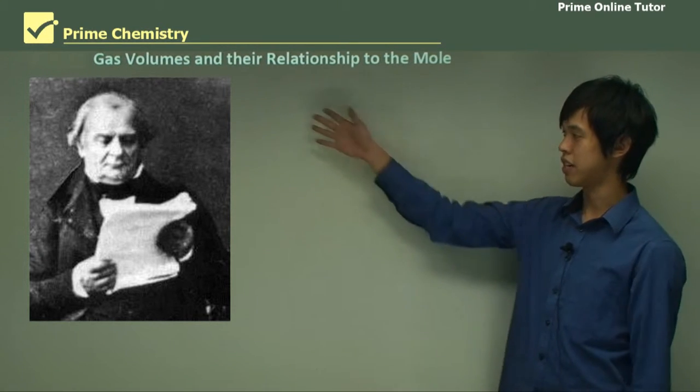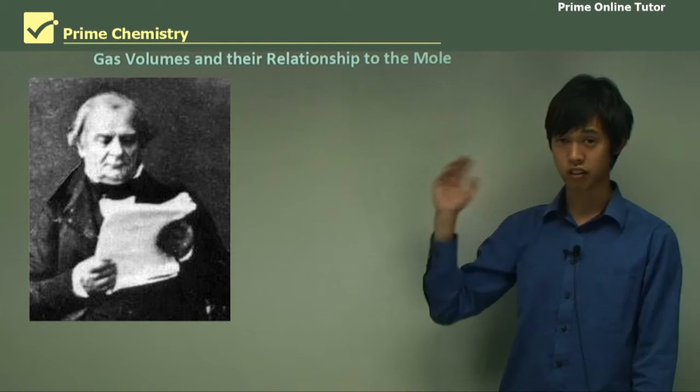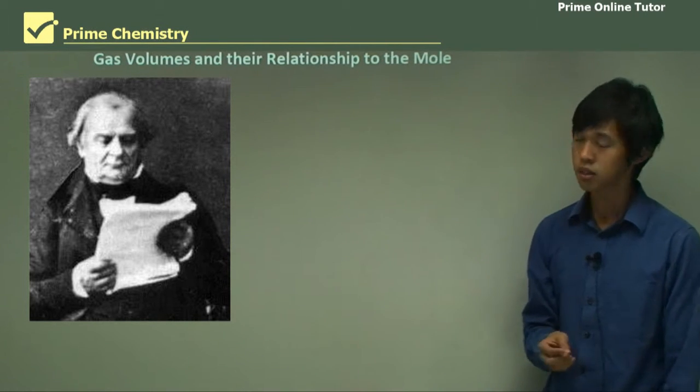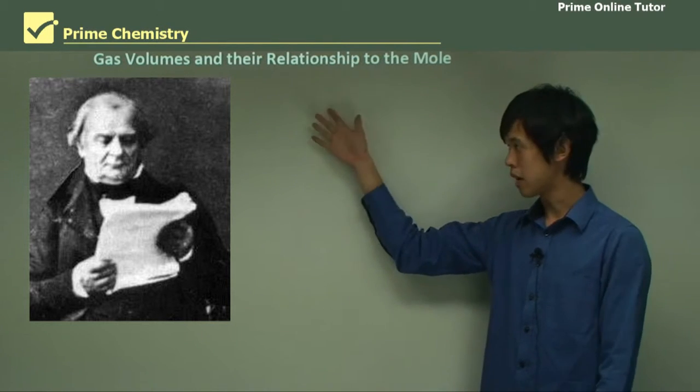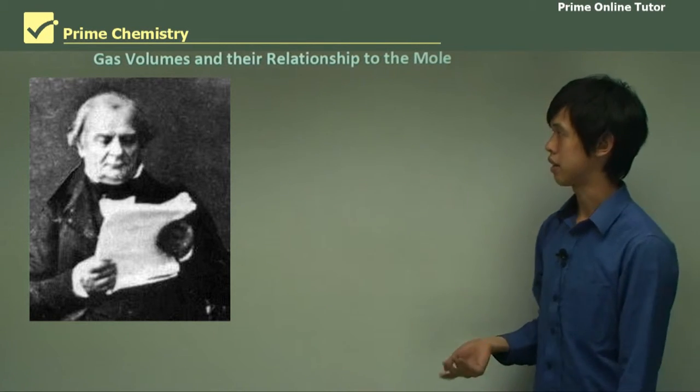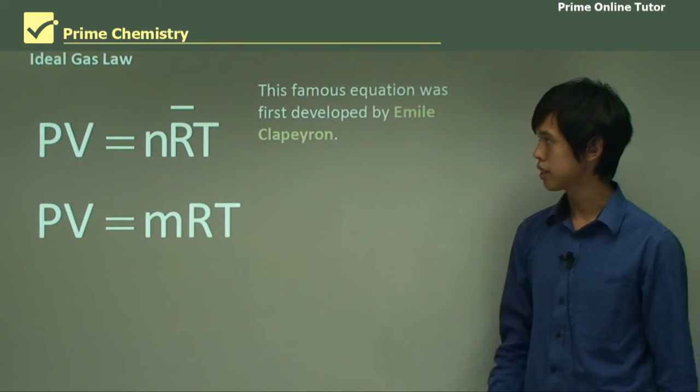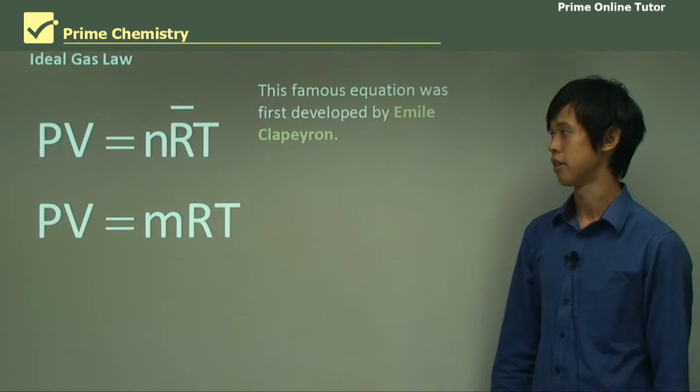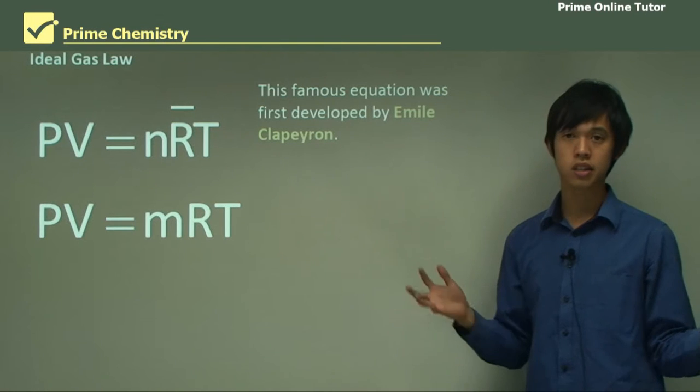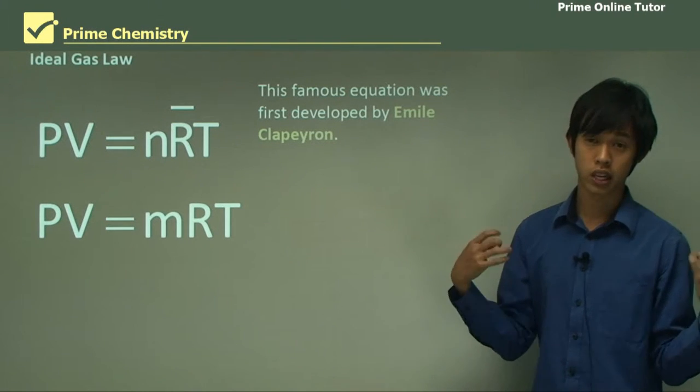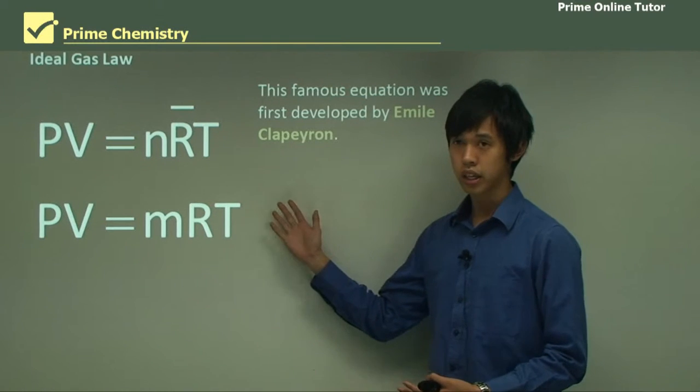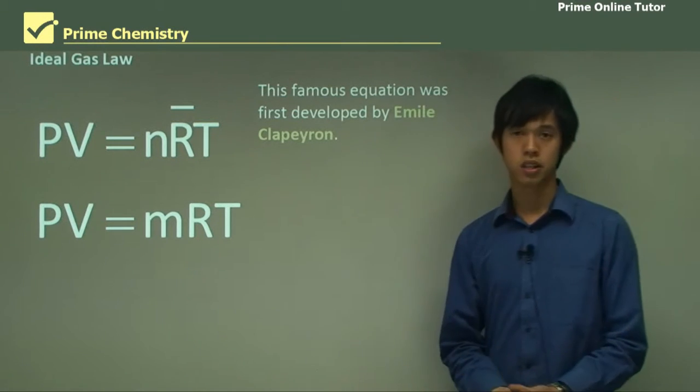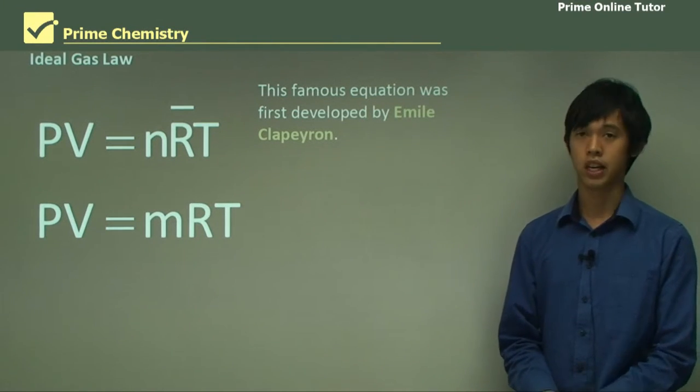And here we have Emile Clapeyron, which is another French scientist dealing with moles and also gases. And he is a prime figure in what we're about to talk about. So the ideal gas law, this is what ties together or what explains Avogadro's law. And it essentially is the mathematical representation of Avogadro's law.